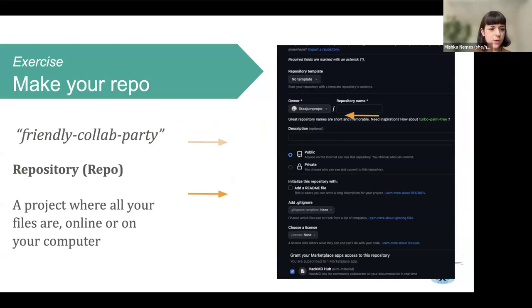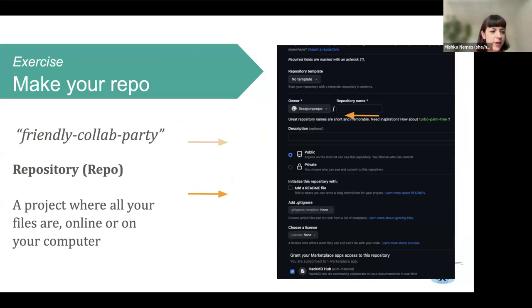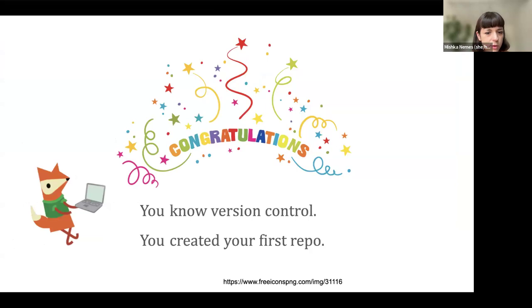This is actually really great because it saves us some time. So if you can go to your GitHub account, we will create a repository — a new repository. I don't think it's mandatory that we call it 'friendly collab party' but this is a suggestion. This will be where we'll do a few other exercises during this session.